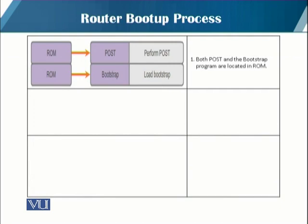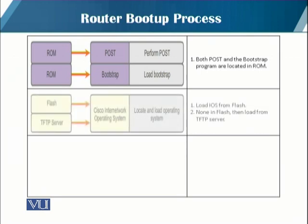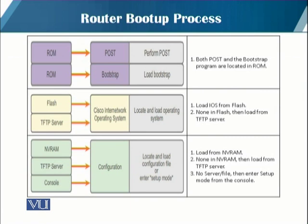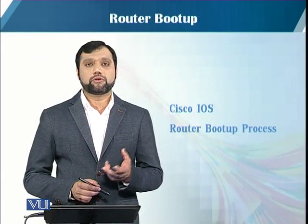These are the steps taken by a router boot-up process. There are three major phases. The first phase is the router performing the POST, which is the power-on self test of each component in the router — a process done by every computer. It also loads the bootstrap program. In the second phase, the router locates and loads the Cisco IOS software. In the third phase, the router locates and loads the startup configuration file, or enters into setup mode.